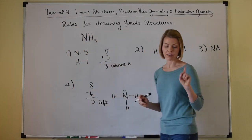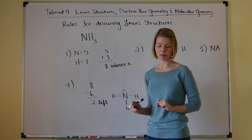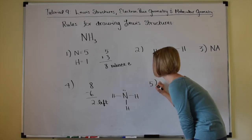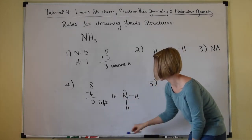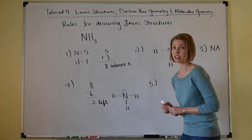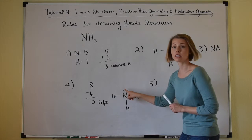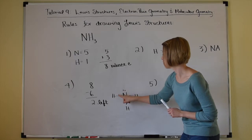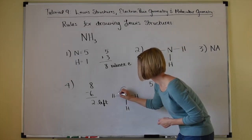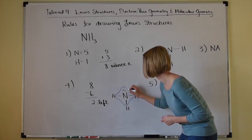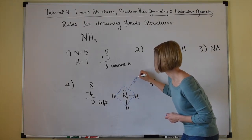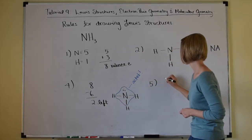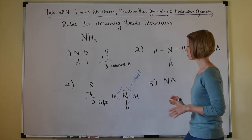Rule number five: if the octet is still not satisfied on your central atom, start forming double or triple bonds as needed. Let's check nitrogen — it has two as a lone pair, plus two electrons in each of the three single bonds, giving two, four, six, eight. Nitrogen has octet, so rule number five is not applicable to this problem.